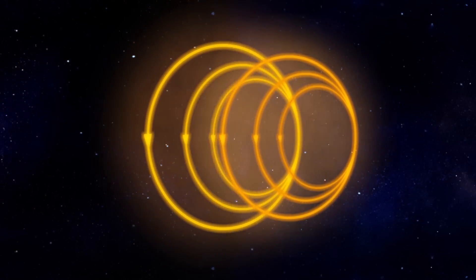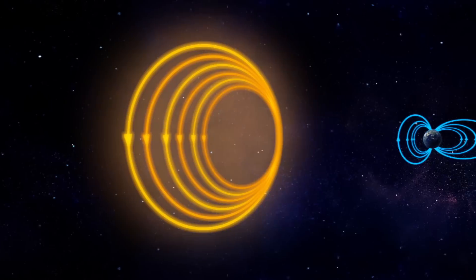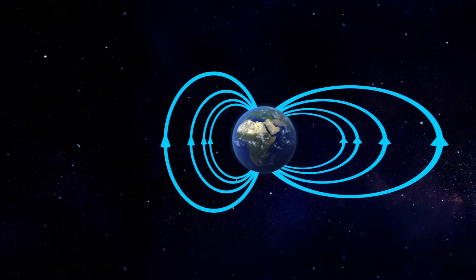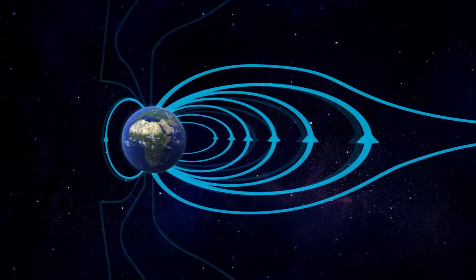When a fast solar wind catches up with a slow solar wind, the concentration of the solar wind will increase. As they approach the Earth, these harmful rays are deflected by the Earth's magnetic fields.